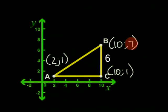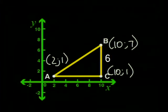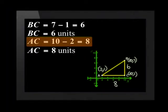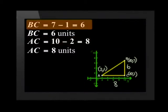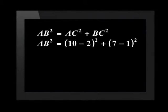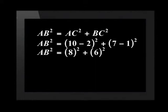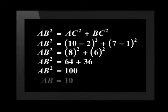Do you see that the difference between the y value at B and the y value at C is the same as the length of BC? And the length of AC is equal to the second x value minus the first x value. Pythagoras said that AB squared equals AC squared plus BC squared. We found that AC was 10 minus 2 and BC was 7 minus 1. If we substitute, we find that AB squared equals (10 minus 2) squared plus (7 minus 1) squared, which gives us 8 squared plus 6 squared — what we worked out for the triangle before. We found that AB is 10 units.